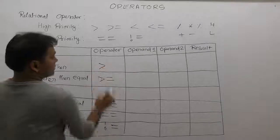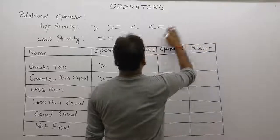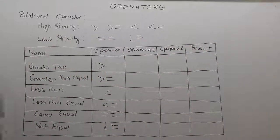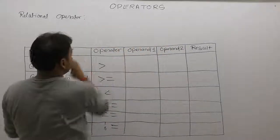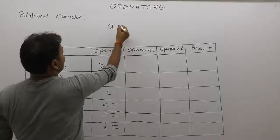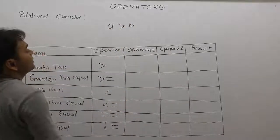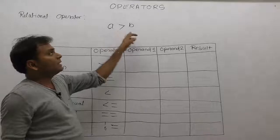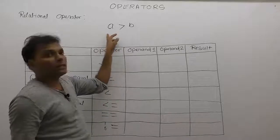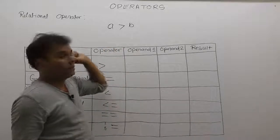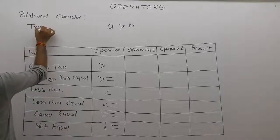First of all, the greater than operator. What is the purpose and working of the greater than operator? In case of greater than, if the value of the first operand is greater than the second operand — for example, a greater than b — we can apply any types of operands upon a relational operator, but its result is generated in the form of true or false.